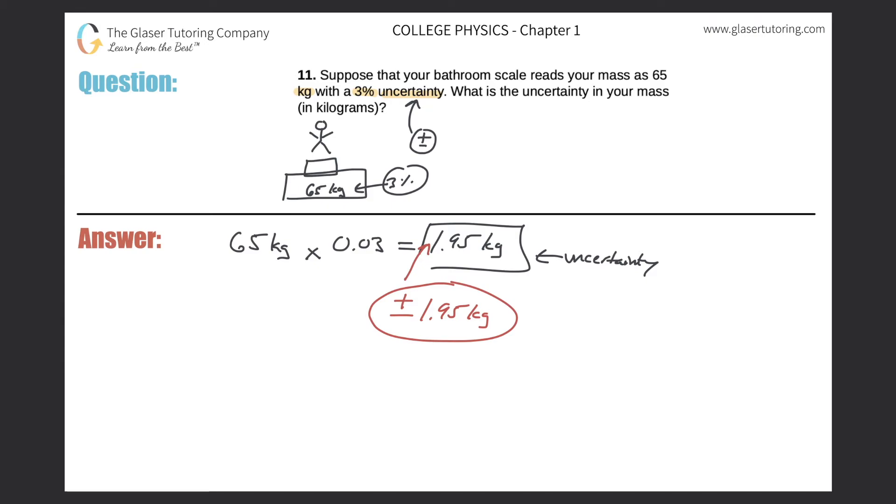And now what we can do is now we can find the bounds of the uncertainty. So meaning I can take the original mass, 65 kilograms, add to that the 1.95 value of the uncertainty, and find the upper limit of the uncertainty. So just take out your calculator, plug that on in, and it comes out to 66.95 kilograms.